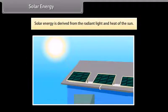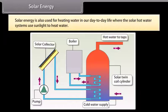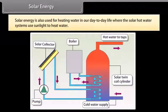Solar energy. Solar energy is derived from the radiant light and heat of the sun. It has been used by humans since ancient times for a range of technologies. Solar energy is used for architecture and urban buildings. Solar energy is also used for heating water in our day-to-day life, where the solar hot water systems use sunlight to heat water. In low geographical latitudes, the domestic hot water usage is provided for with temperatures up to 60 degrees Celsius by solar heating systems. The most common types of solar water heaters are evacuated tube collectors and glazed flat plate collectors, generally used for domestic hot water, and unglazed plastic collectors used mainly to heat swimming pools.